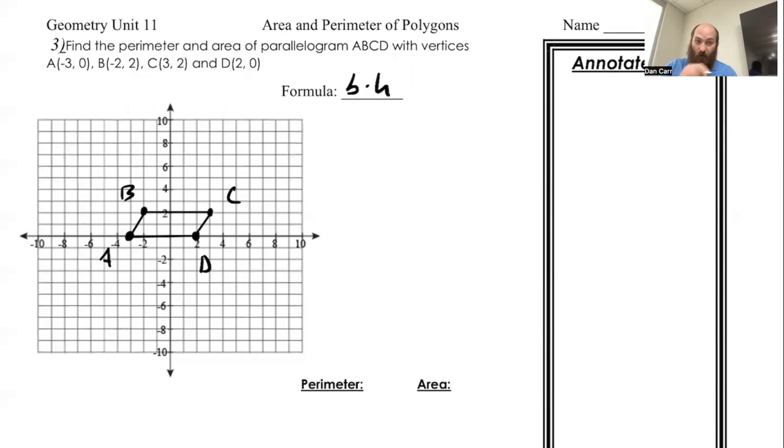So parallelogram. We've got to find all four lengths for the perimeter. So we've got AB, BC, CD, and AD. BC and AD are going to be quick and easy because I can just count them. 1, 2, 3, 4, 5. So BC is 5 and so is AD.